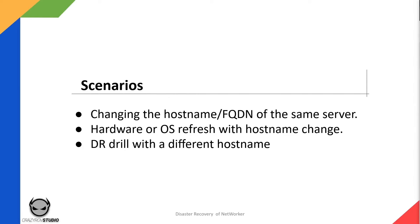Whenever you run nsrck -l7, what NetWorker does is check the indexed backups against the client ID of the NetWorker server. If it is not able to find any index backups attached to that client ID, it will say there are no backups available — even though the backups belong to an old hostname. This is especially important in DR drill scenarios or when moving to completely new hardware or an OS where you need to run a NetWorker DR to get the resource database, media database, and client indexes.